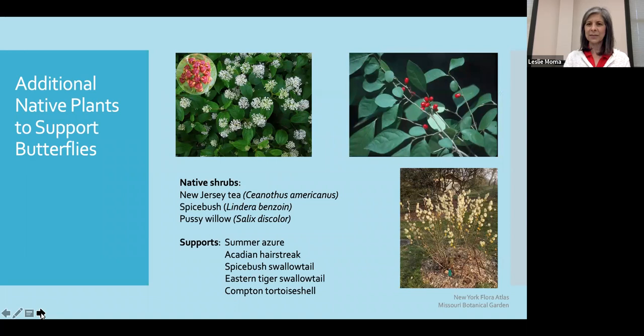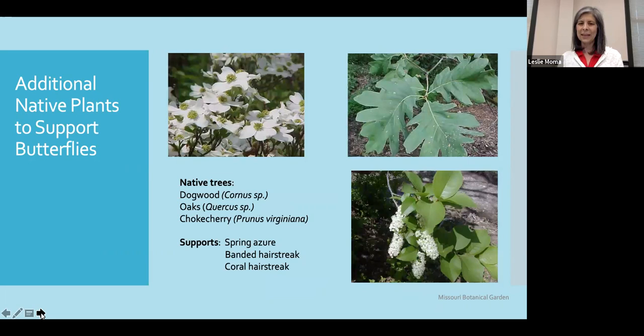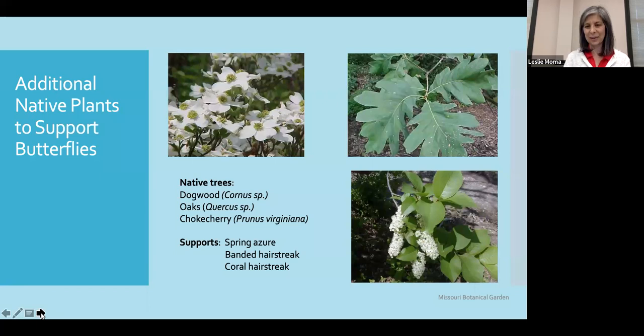There are some native shrubs to consider as well for structure in our gardens — the New Jersey tea, the spicebush, and even the pussy willow. By having these plants in our garden, we are supporting the summer azure, the Acadian hairstreak, as well as a number of swallowtails. And native trees such as dogwoods, oaks, and chokecherries are going to provide those first flowers of spring, supporting the spring azure, the banded hairstreak, and the coral hairstreak.